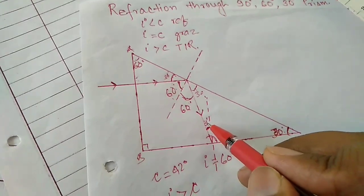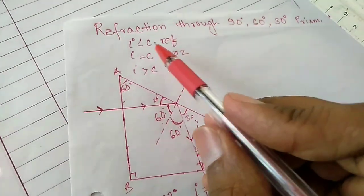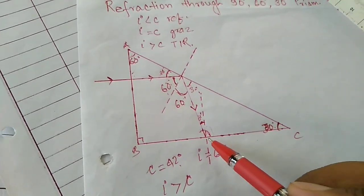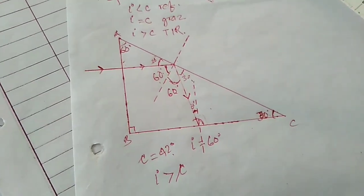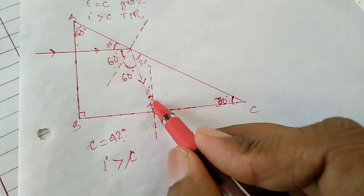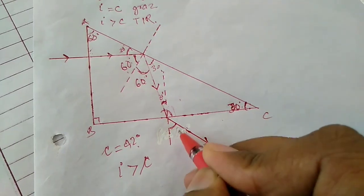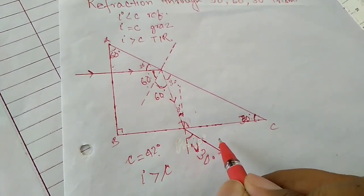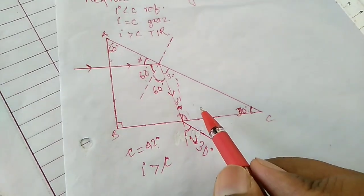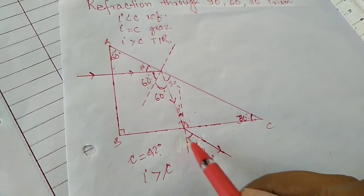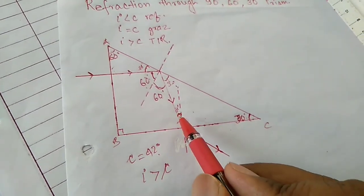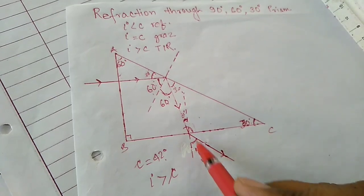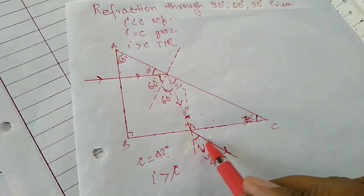So the angle of incidence is 30 degrees, which is less than the critical angle of 42 degrees. So refraction will happen, and the light will go away from the normal because it is going from denser to rarer medium. The angle of emergence will be more than 30 degrees. In the examination, you do not need to calculate exactly what the angle of emergence is — only note that since the angle of incidence is 30 degrees, refraction will occur and the angle of emergence will be more than the angle of incidence.